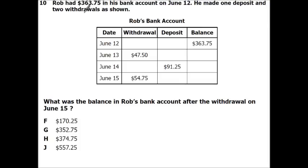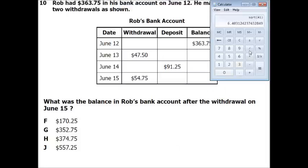Alright, Rob had $363.75 in his bank account on June 12th. He made one deposit and two withdrawals as shown. What was the balance of the bank account after the withdrawal on June 15th? Alright, so remember, withdrawal makes you go down. Deposit makes you go up. So for this one, I'm going to subtract $363.75 minus $47.50. So let's go ahead and do that. $363.75 minus $47.50. So that gives me $316.25.